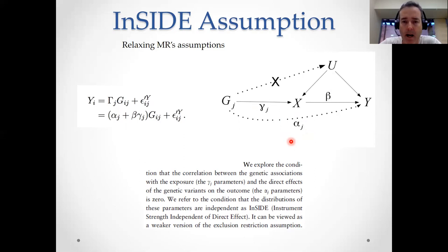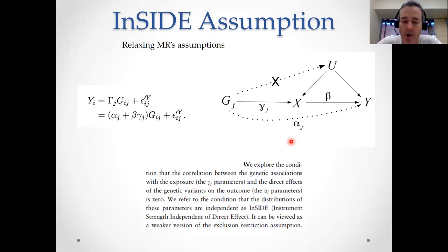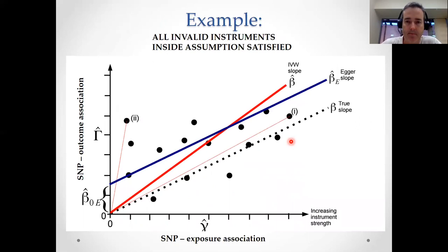How likely is InSIDE to be held in practice? Perhaps not all that often. For example, it's reasonable to expect that a SNP that is a missense SNP not only has a large effect on the exposure of interest, but it might also have a large pleiotropic effect on the outcome as well. So InSIDE is an assumption which may not always hold in practice. It is, however, a less strict assumption than there being absolutely no horizontal pleiotropy in the dataset.